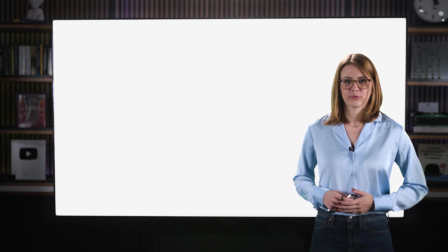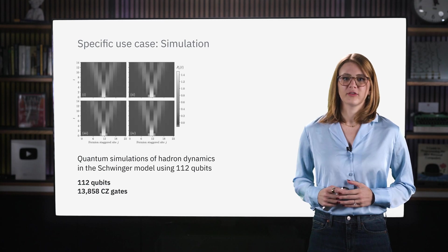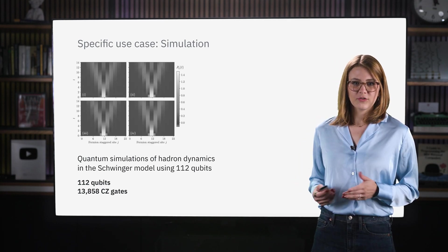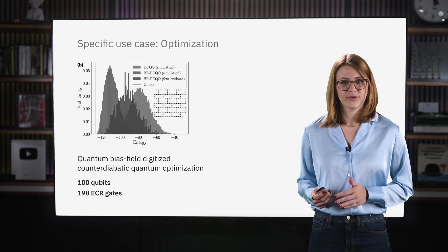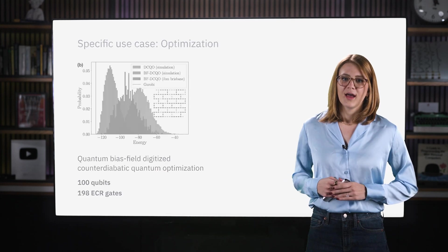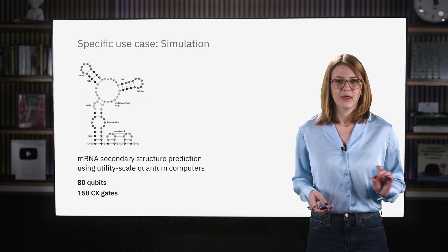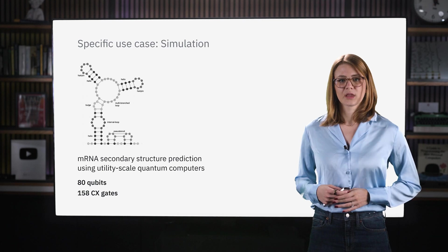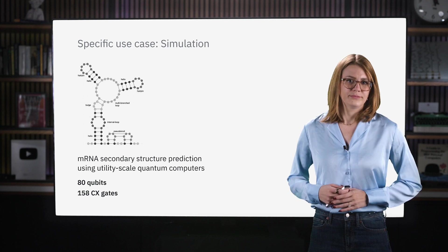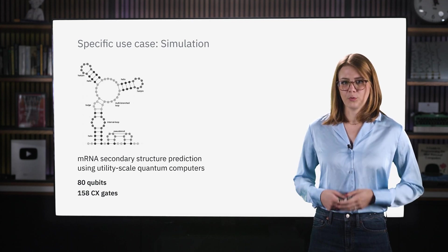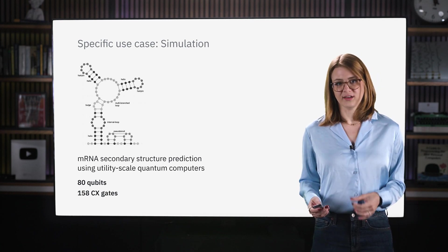The specific use cases and papers that we are going to be taking an in-depth look at are these. First, we will explore a paper that discusses simulation of hadron dynamics. This falls into the high energy physics category. Next, we will look at an optimization problem, specifically bias field counter-adiabatic quantum optimization. And lastly, we will look at yet another simulation problem, but this time focusing on mRNA, a crucial molecule for drug and therapeutic development. If you're familiar or not with these papers, that's no problem. We are going to walk through them. All three are important papers that tackle problems of substantial size and show how quantum computers are beginning to be used as another method of scientific inquiry.